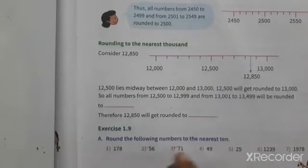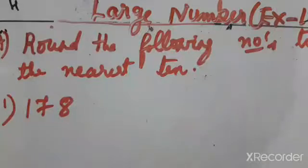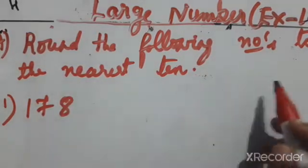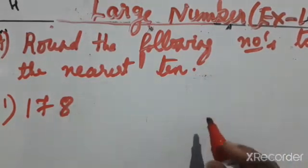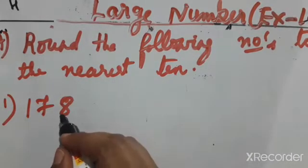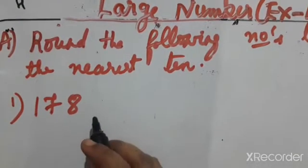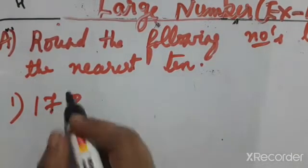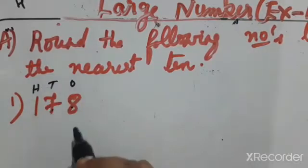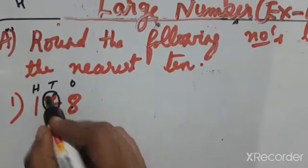First, we have to check the place value — in which place we have to round off. We need to round off to the tens place. So the tens place we have to round off, and the number we are rounding is in the tens position.